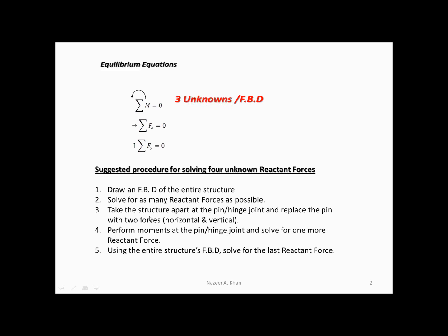The next step is to take the structure apart at the pin or hinge joint and replace the pin with two forces — one horizontal, one vertical. Perform moments at the pin or hinge joint and solve for one reactant force. Once you have done that, go back to the FBD of the entire structure and solve for the remaining last reactant force.